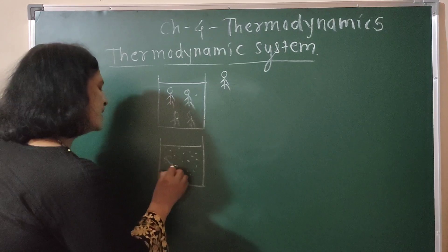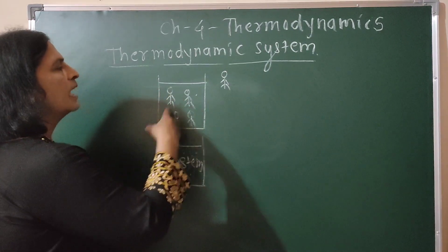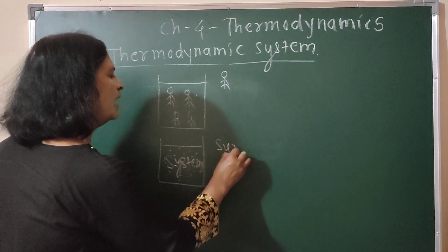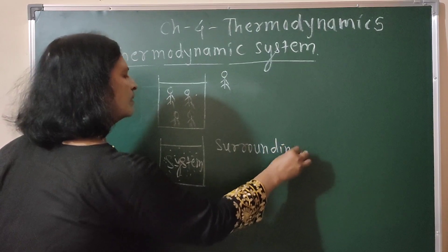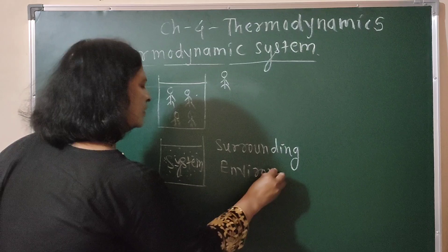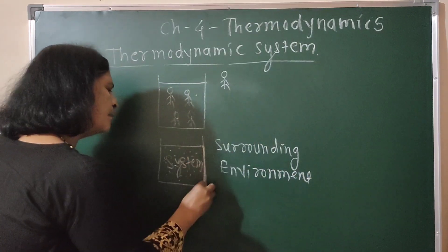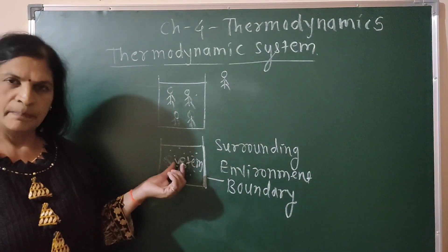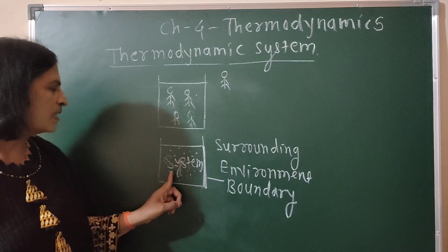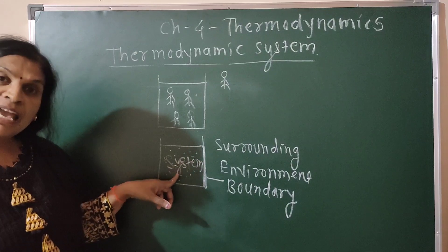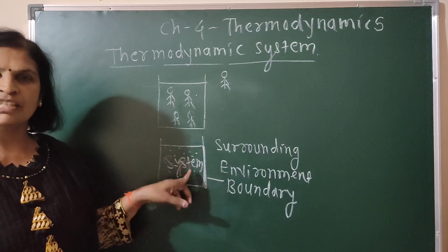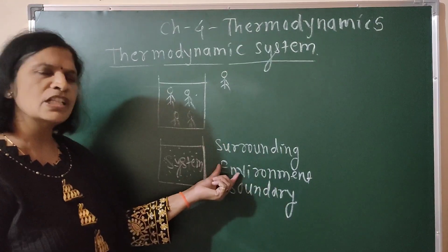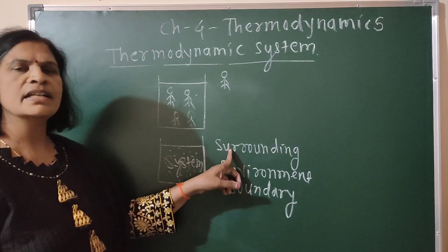So, this class is a system and a student present outside the classroom is the surrounding, also called the environment. A boundary separates the system and surrounding. The definition of a thermodynamic system: it is a group or collection of objects that may have the ability to exchange thermal energy with the surrounding. Anything outside the system is called surrounding or environment, and boundary separates the system and surrounding.